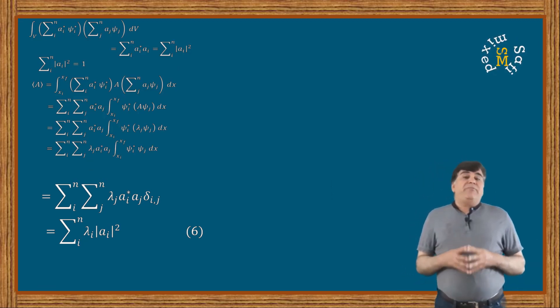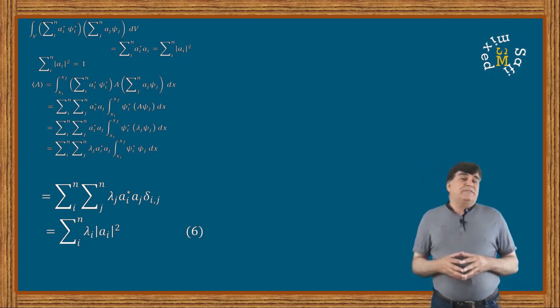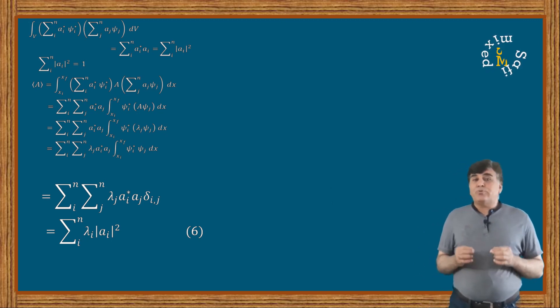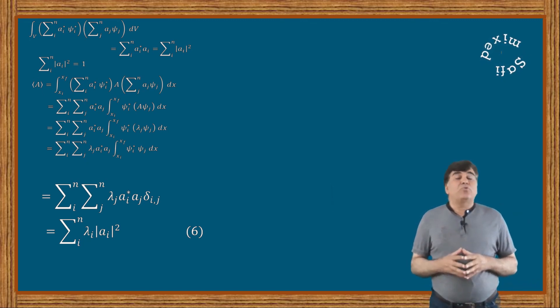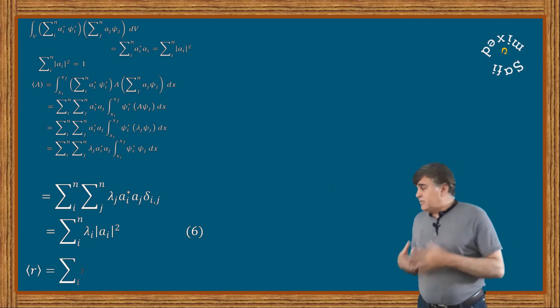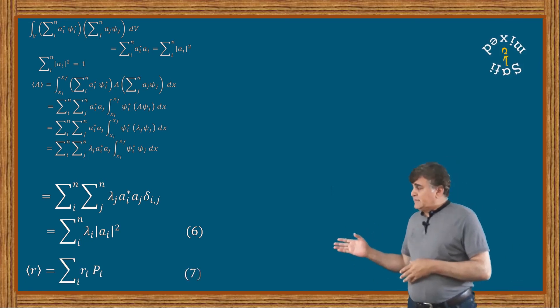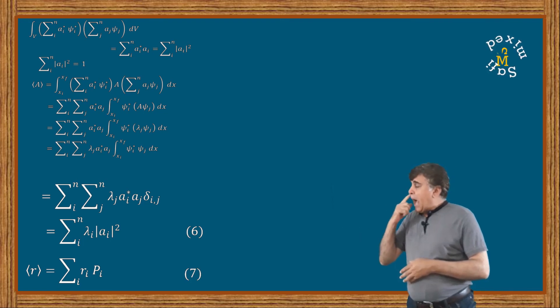If we carefully look at equation 6 and recall the approach of probability theory, it is in the form of average value of a random variable r. That is, the expectation value of r equals rᵢ times pᵢ summed over i.